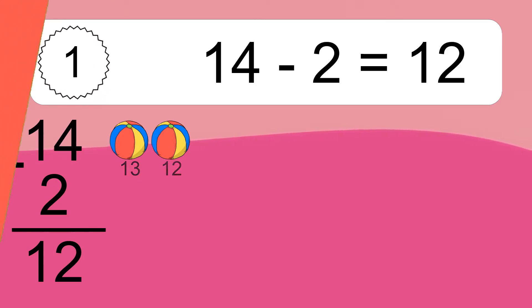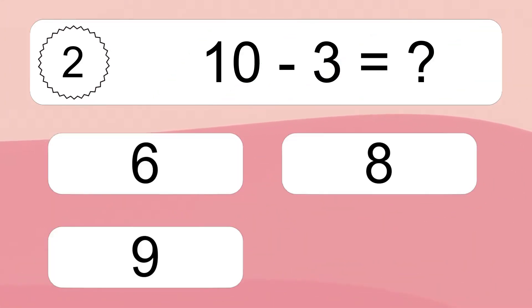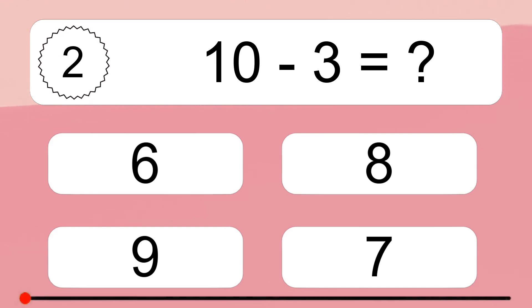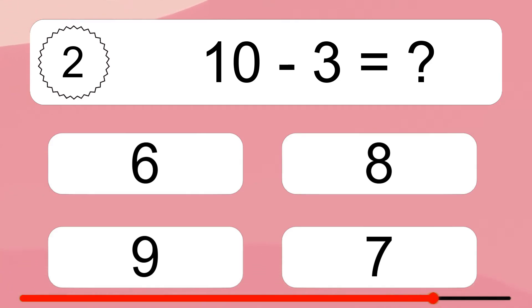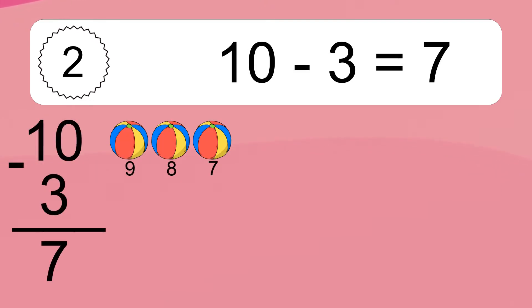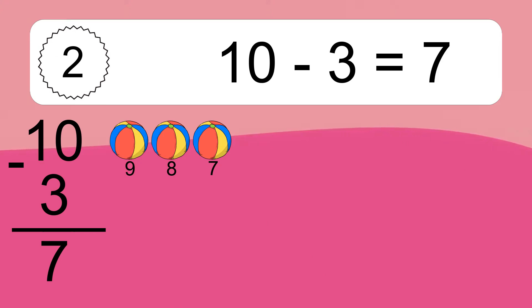10 minus 3 equals what? 10 minus 3 equals 7. Let's count it: 9, 8, 7.